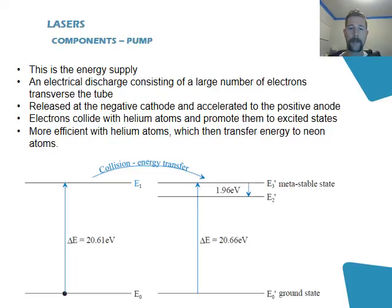The pump is the second component we'll discuss, and this is the energy supply. An electrical discharge consisting of a large number of electrons traverses the tube. These electrons actually collide with the helium atoms in a process that is more efficient than the neon atoms, and raise the helium atoms to a higher energy level. The helium atoms then transfer this energy to the neon atoms.